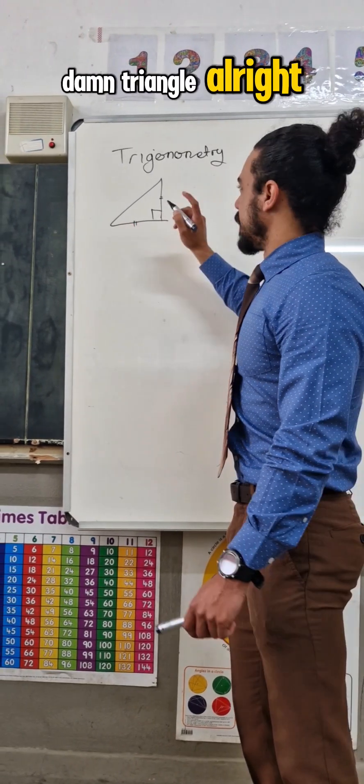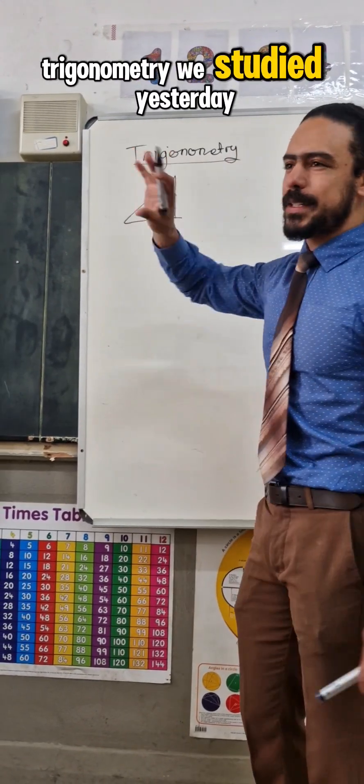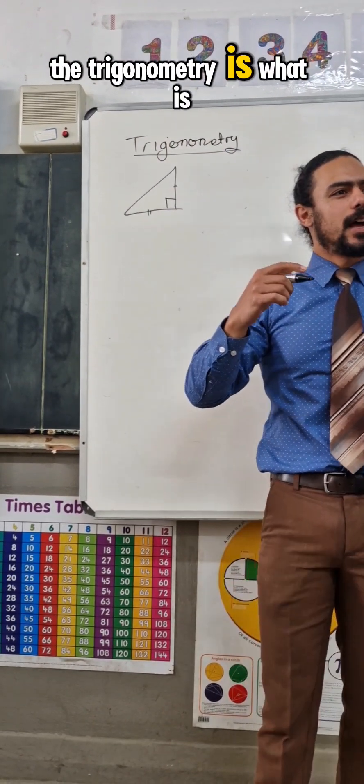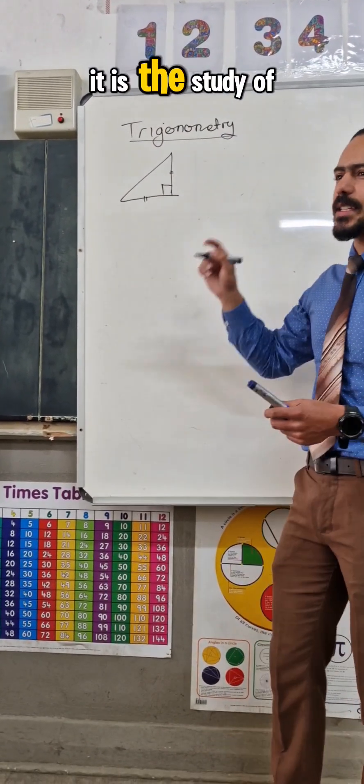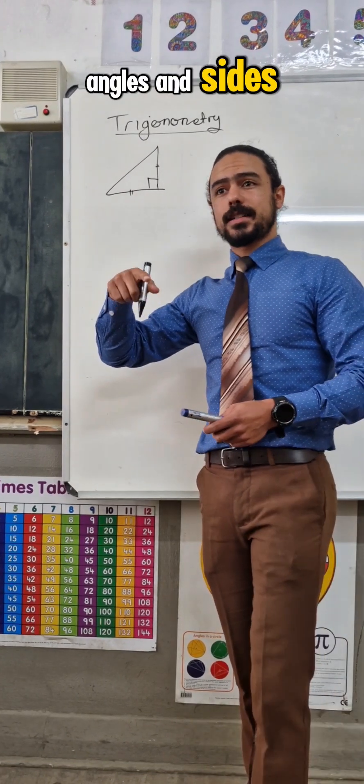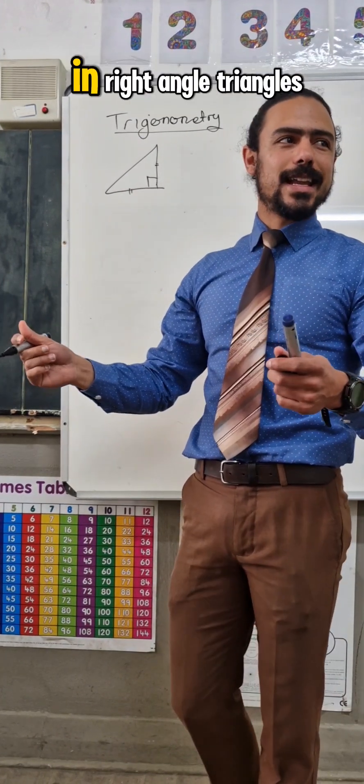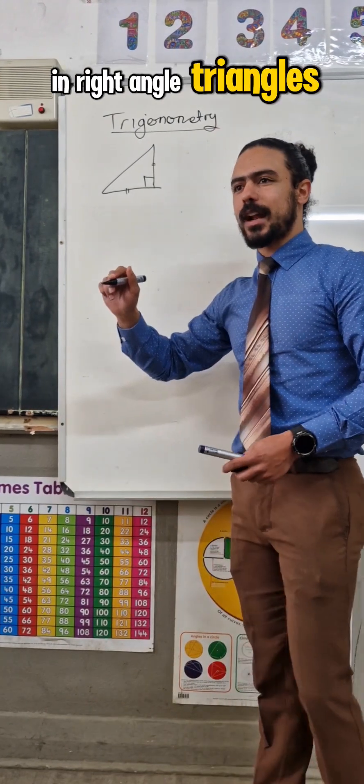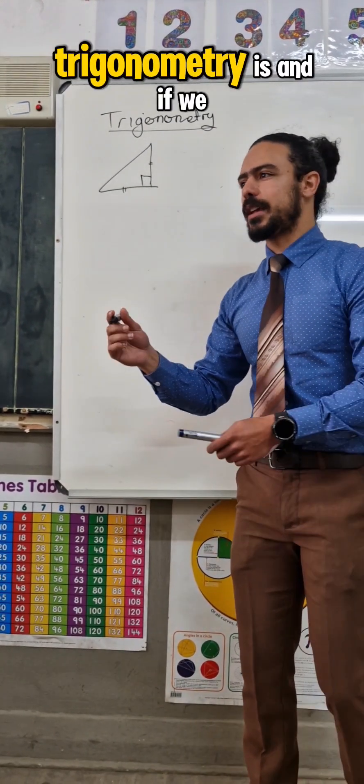Right, so trigonometry we established yesterday, that trigonometry is, what is trigonometry? It is the study of angles and sides, and the measurement of those in right angles. That is basically what trigonometry is.